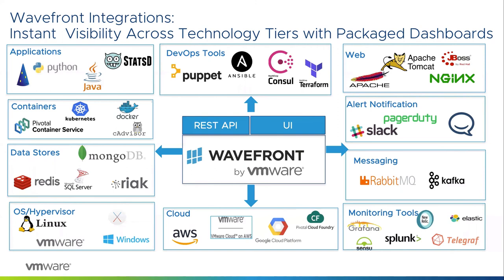We have more than 135 integrations now, and we're building new ones on a monthly basis. We have support for the most popular public cloud providers: Amazon, Microsoft Azure, Google Cloud Platform, and VMware on AWS. We support microservices like Docker, and can collect metrics from StatsD and Telegraf. For alerting, we can push alerts to PagerDuty, Slack, or any webhook you can listen to.